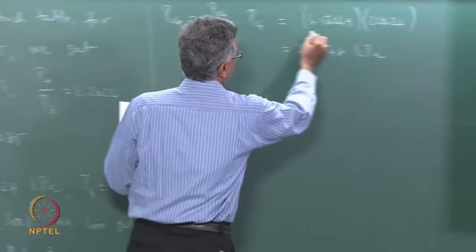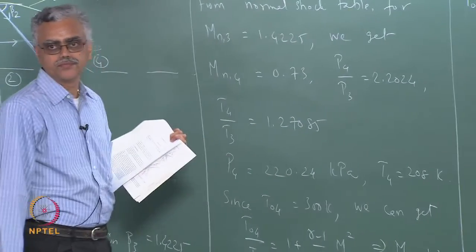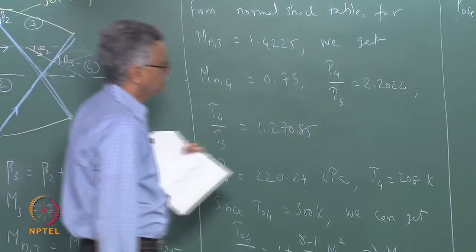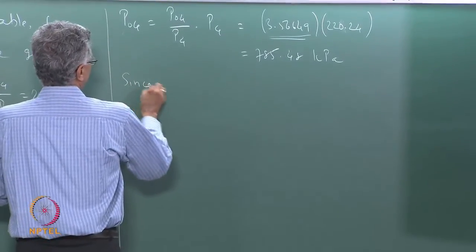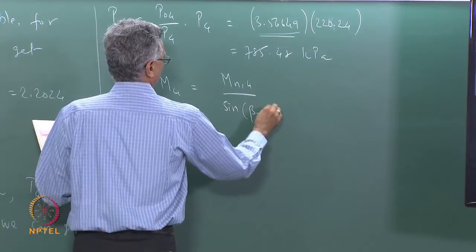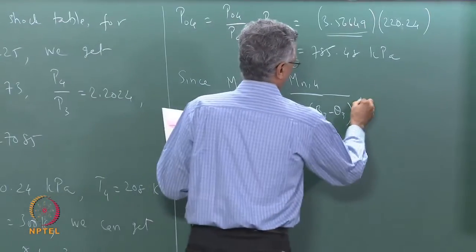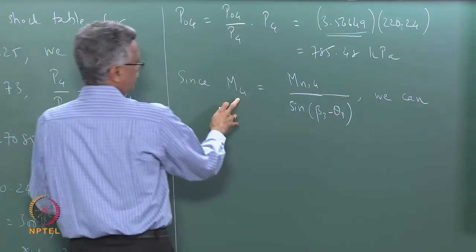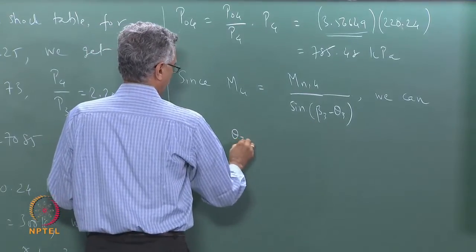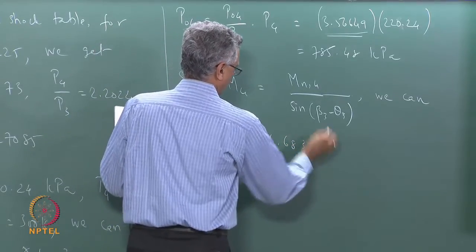The stagnation pressure P04 is obtained from the isentropic table for M4 = 1.48. For theta3, using M4 = Mn4 / sin(beta3 − theta3) with all quantities known, we get theta3 = 14.6834 degrees.